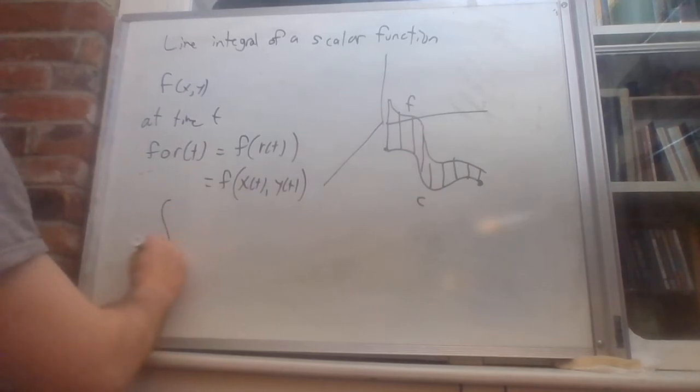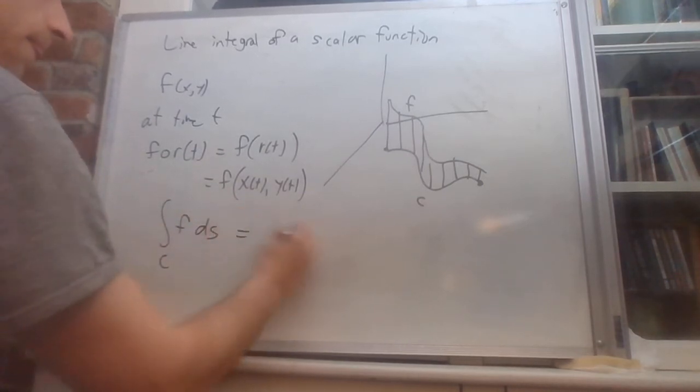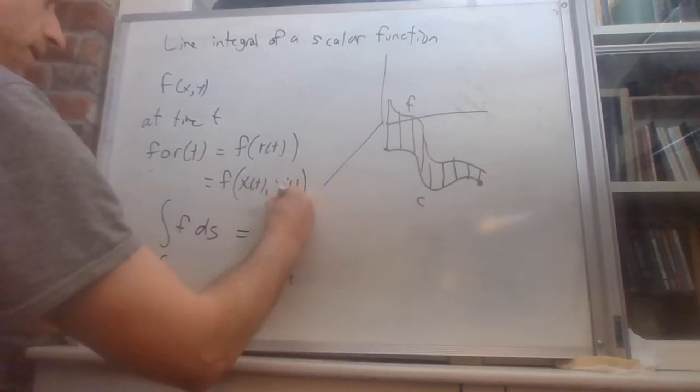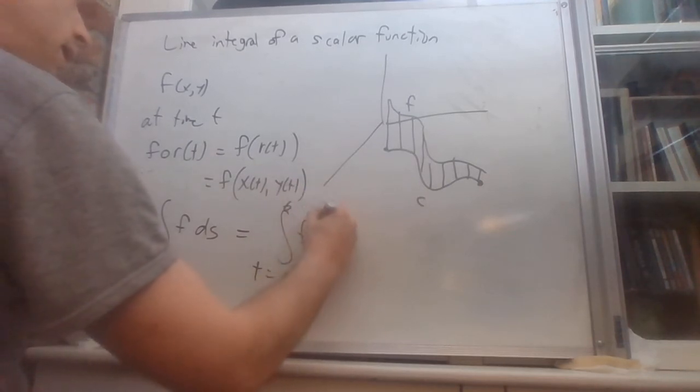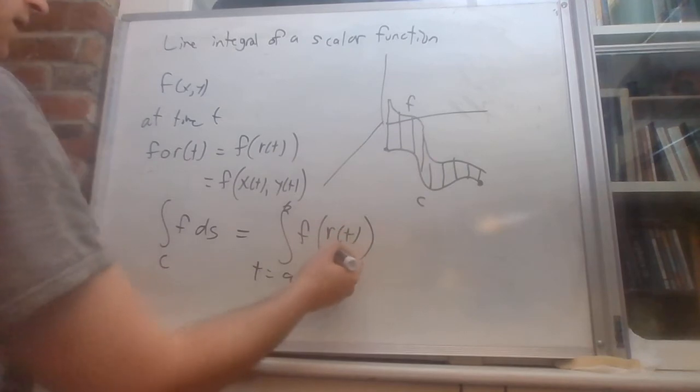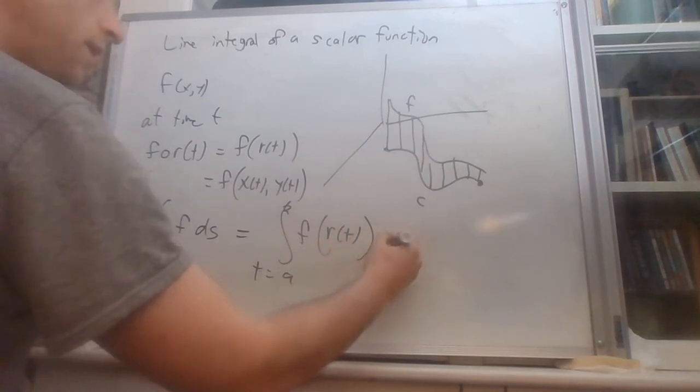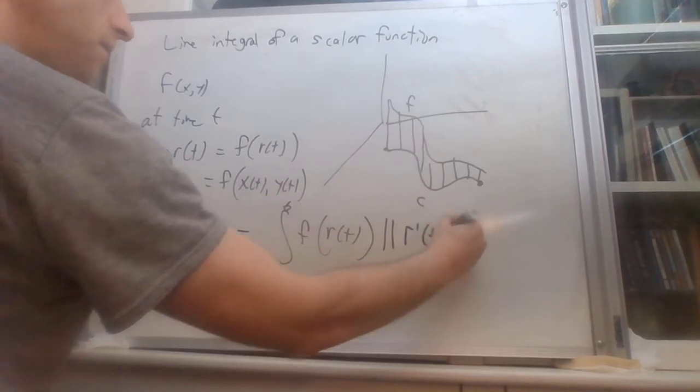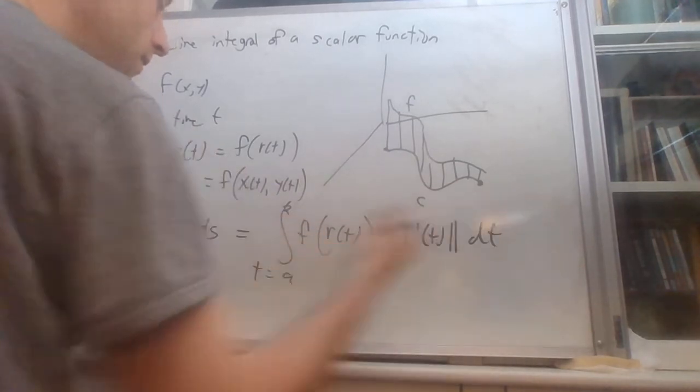This integral splits up into: time goes from a to b, f with r plugged in—that's x of t, y of t—times the magnitude of r prime of t, dt.